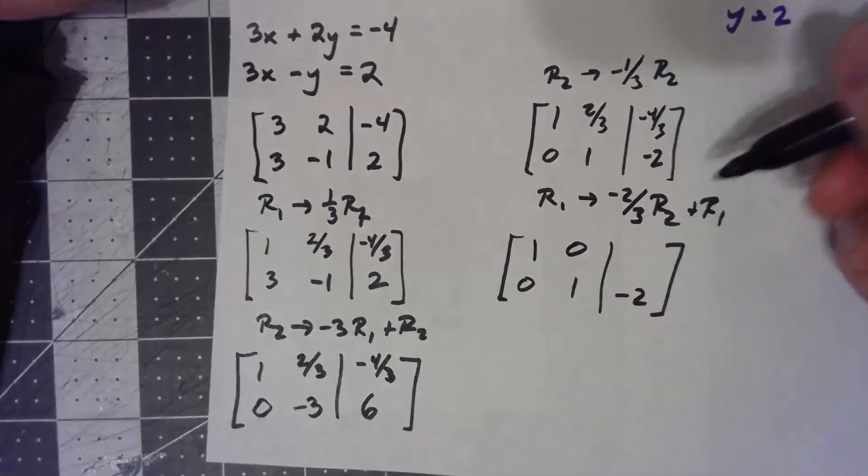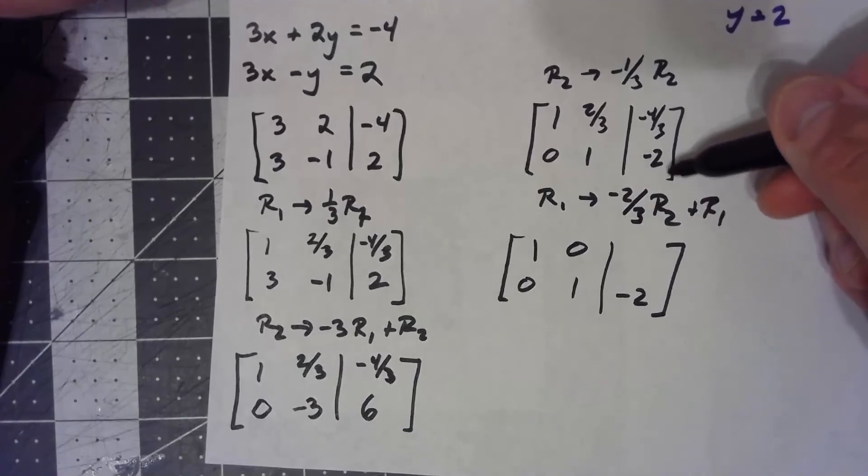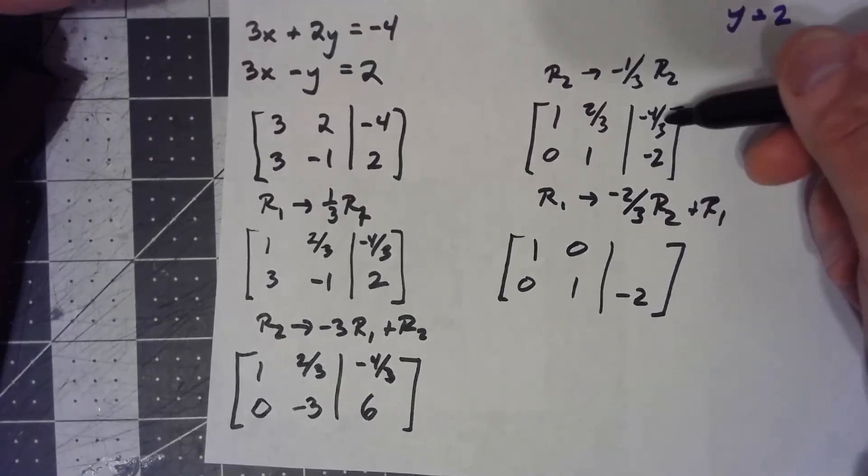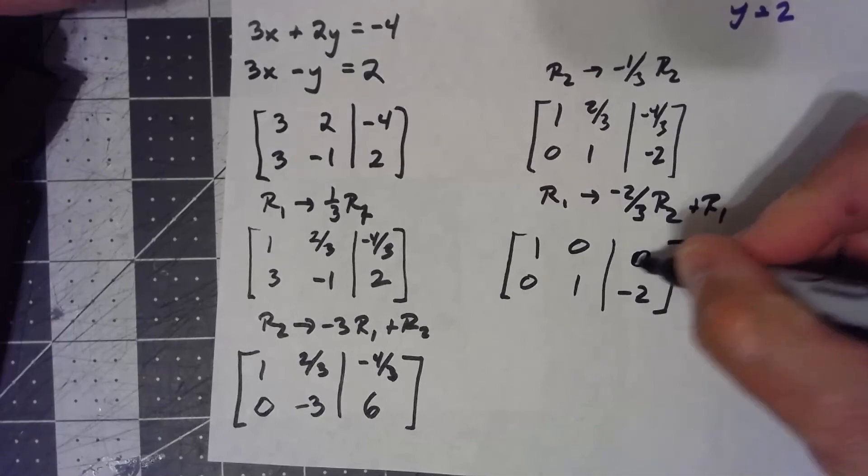The whole point is to make that a 0. Negative 2/3rds times negative 2 is positive 4/3rds. Added to negative 4/3rds makes it a 0.